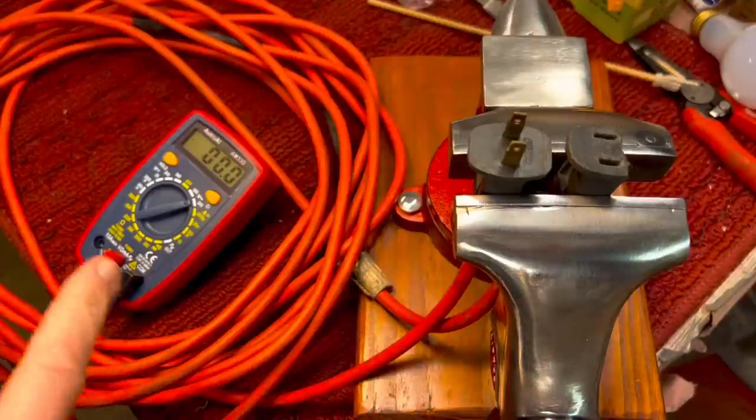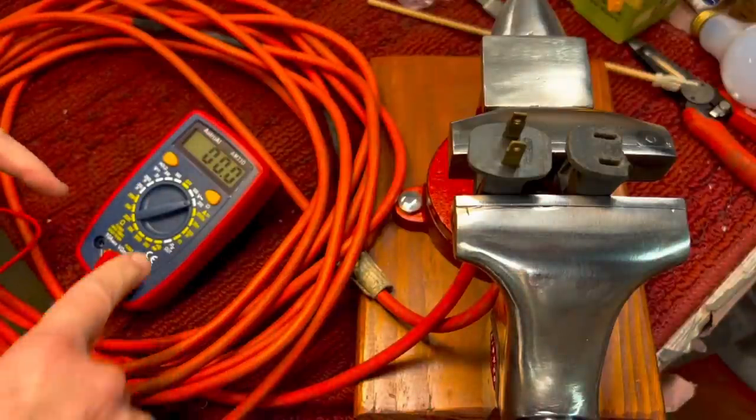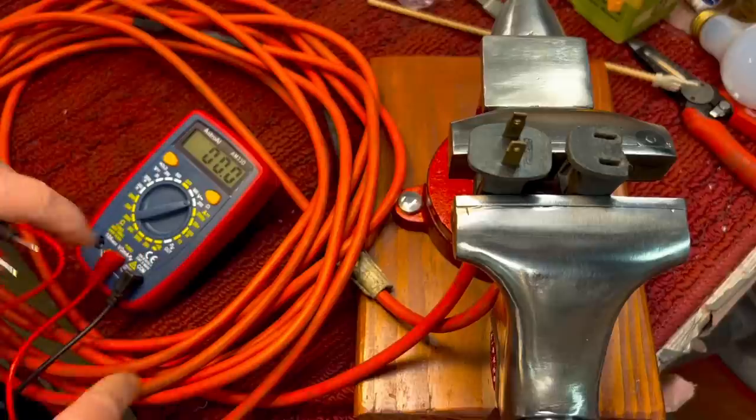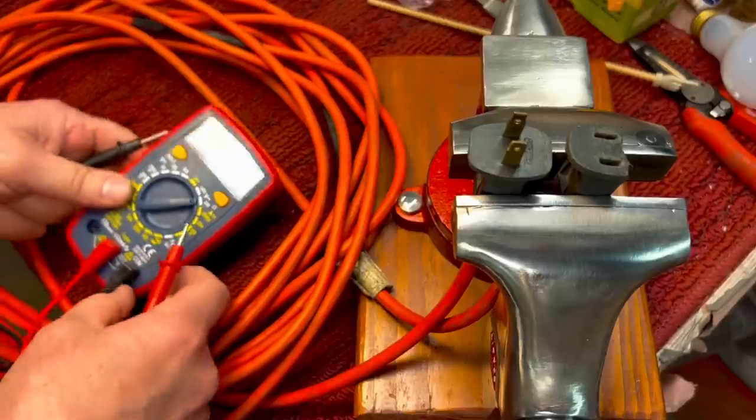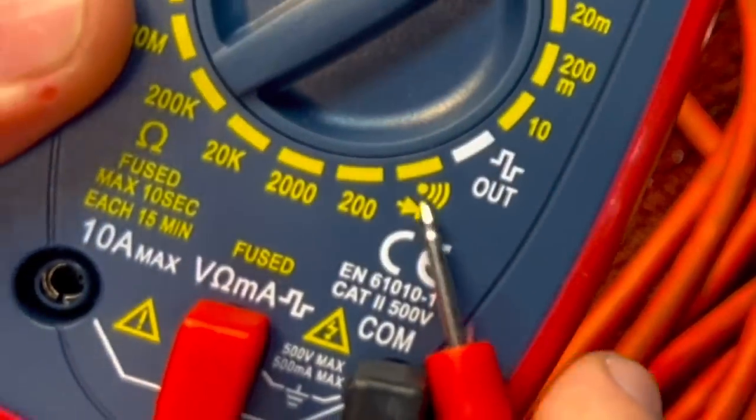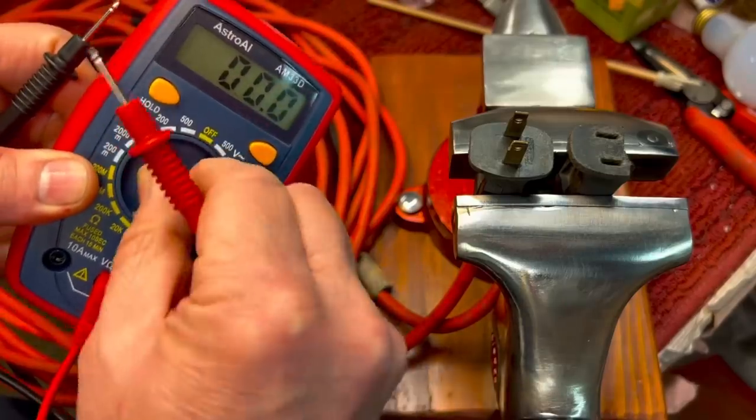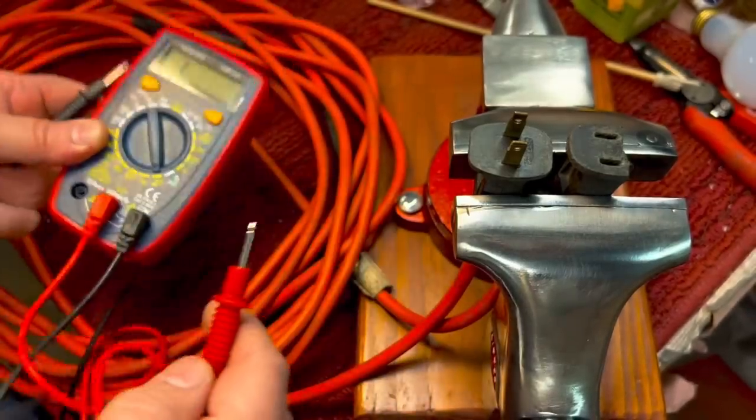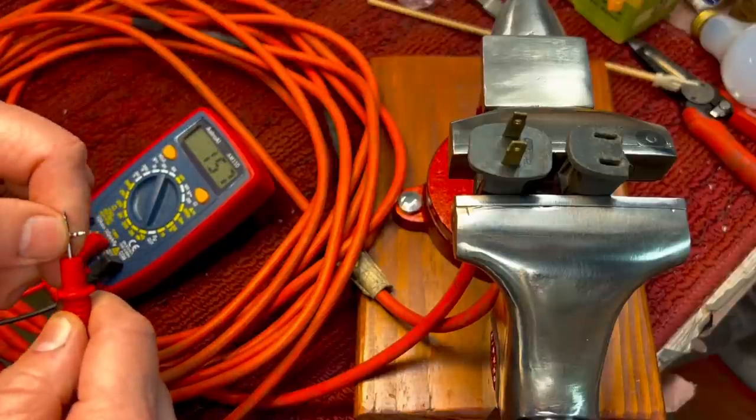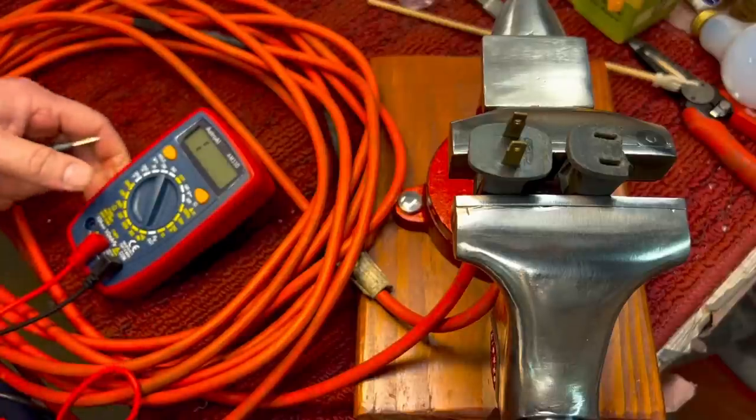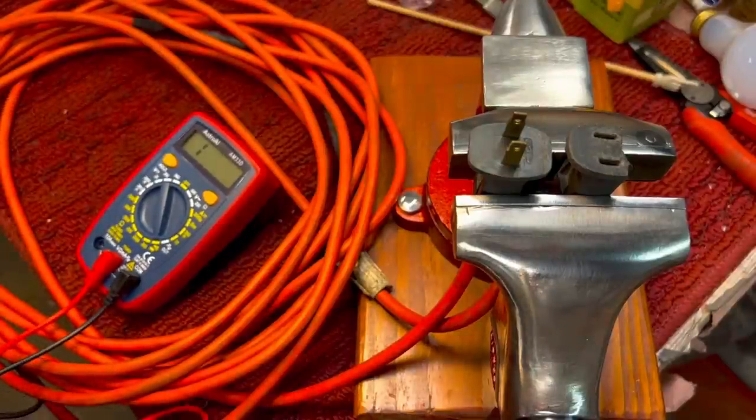Next most common usage is continuity, which means you want to see if something's connected. We're going to put it to ohms. If you look over here, this is ohms. It's got a little speaker right here. You see that little sounding? So we put it on there. And then when we touch the two together, hear that beep? That lets you know that you have continuity.